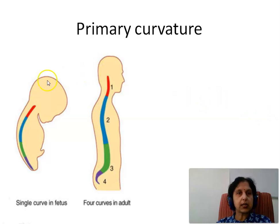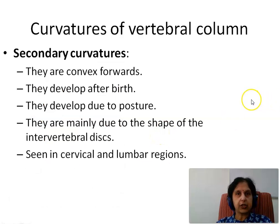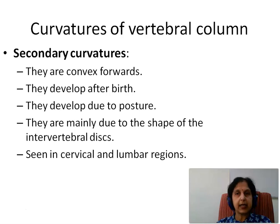The picture here shows us the primary curvature which is seen during fetal life, which is concave anteriorly and convex posteriorly, while the other picture shows us the secondary curvatures which are seen after birth. Secondary curvatures are convex forwards and concave backwards. They develop after birth due to posture. They are mainly due to the shape of the intervertebral disc and they are seen in the cervical and the lumbar regions.